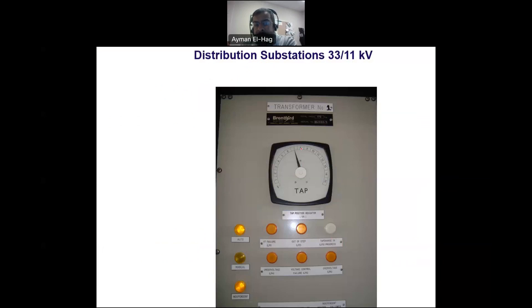This shows the actual tap selection of that specific transformer. Whenever there is a change in the tap, this will be done here, and it is in auto mode, meaning that whenever the voltage drops, you increase the number of taps. If the voltage increases, then you reduce the voltage to maintain it within certain limits. You can change from auto to manual if you want to change the tap changer manually.